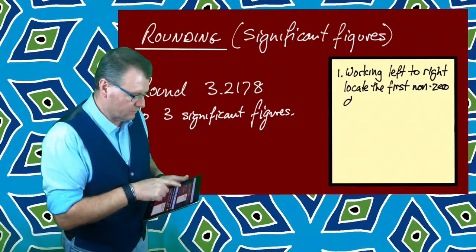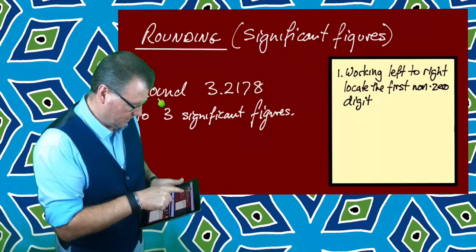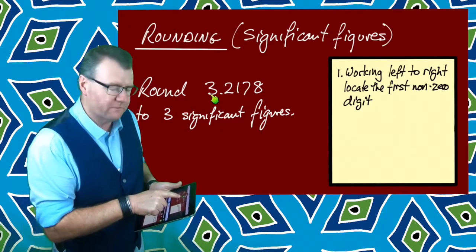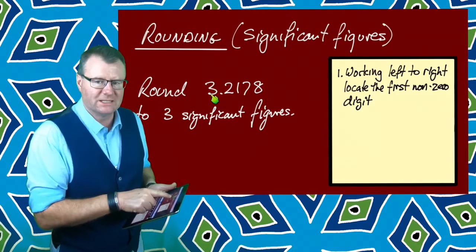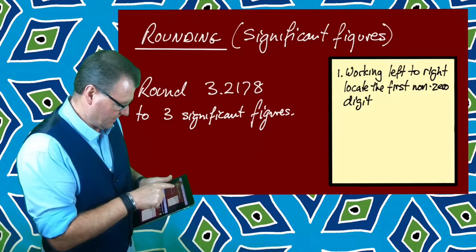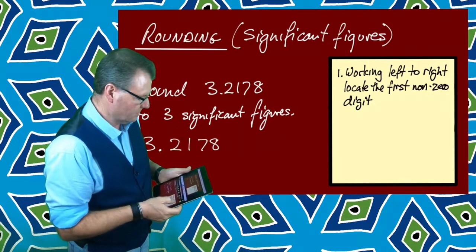I'm going to work from left to right. I'm going to start out here and come in until I hit the first number that isn't a zero. So if I started here, I come in, the first number I hit is the three. It's not a zero.